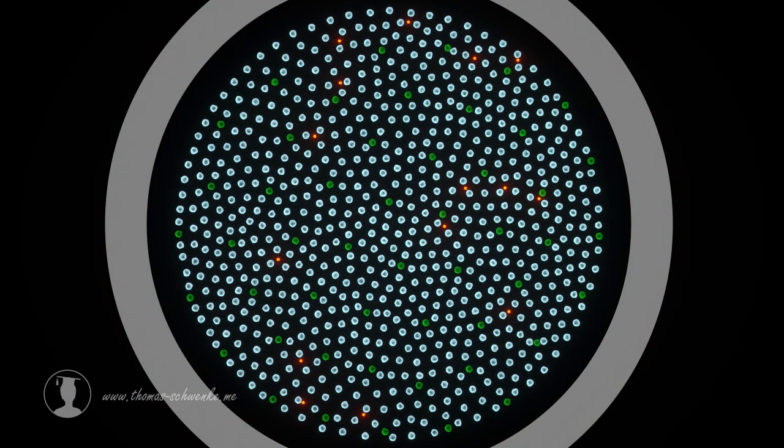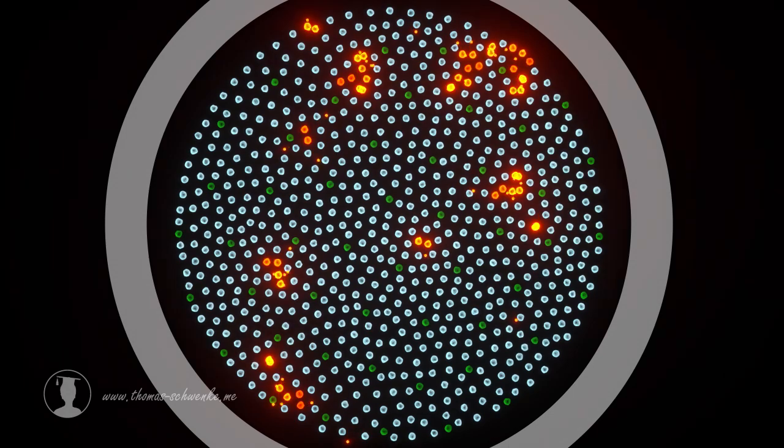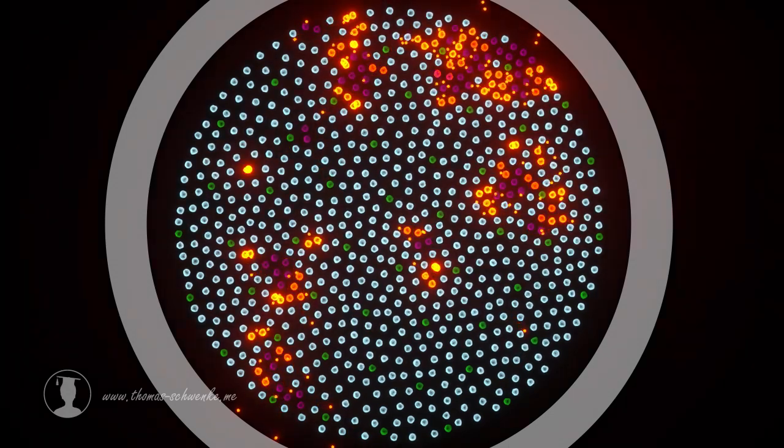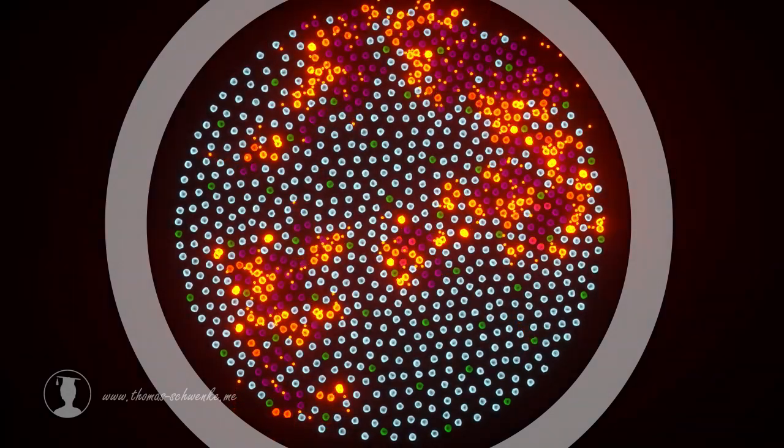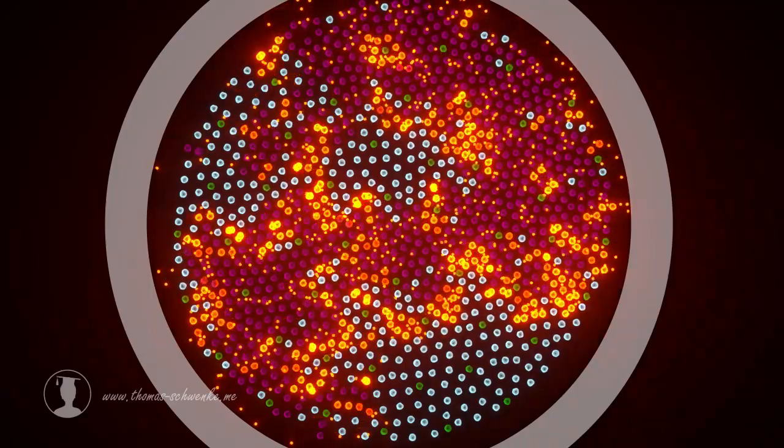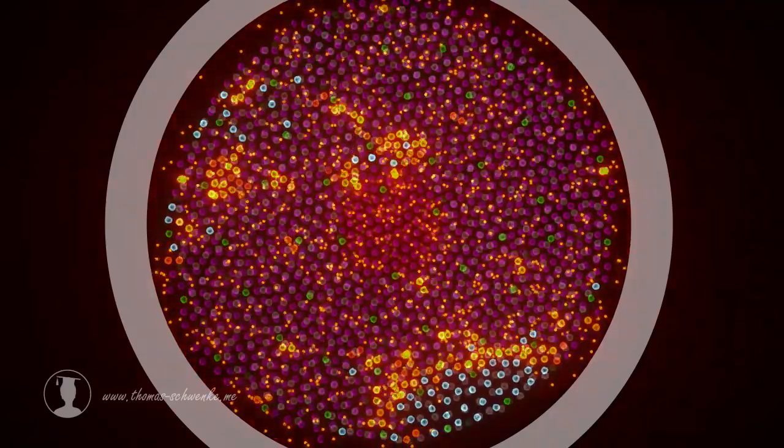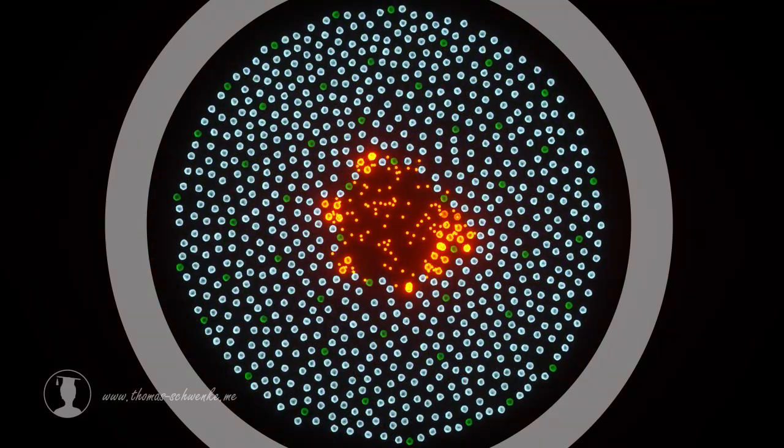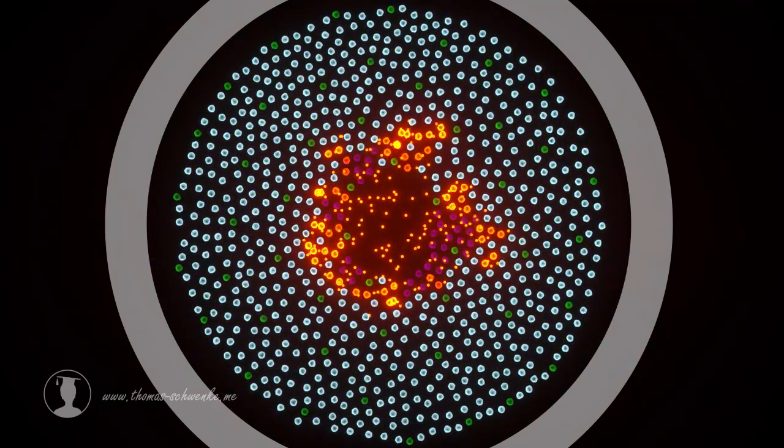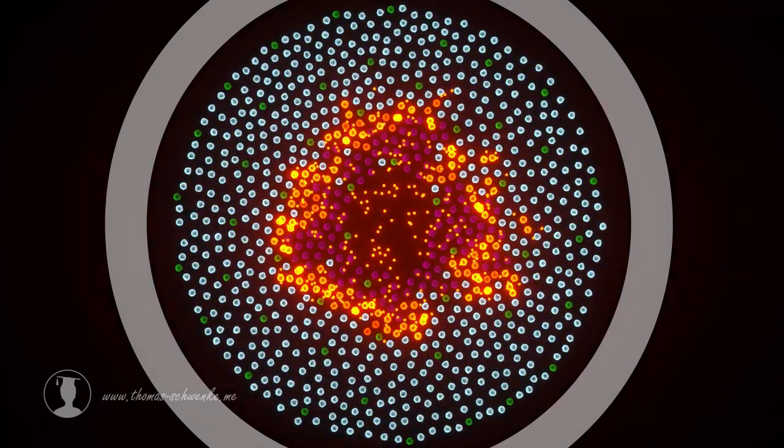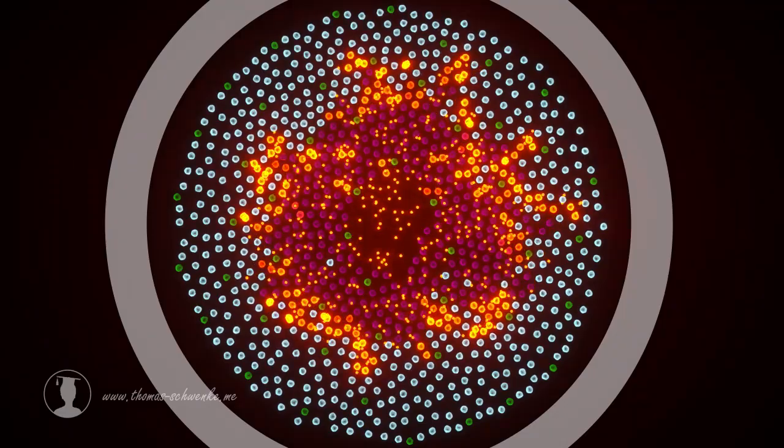In the next step, the plutonium must be compressed so that the atoms are closer together. Only then can the chain reaction take place efficiently enough. Enough neutrons must be released at the right time to make a nuclear weapon. This is the chain reaction of a nuclear bomb.